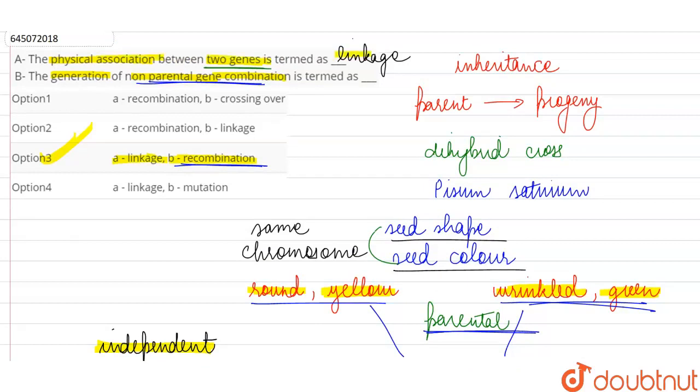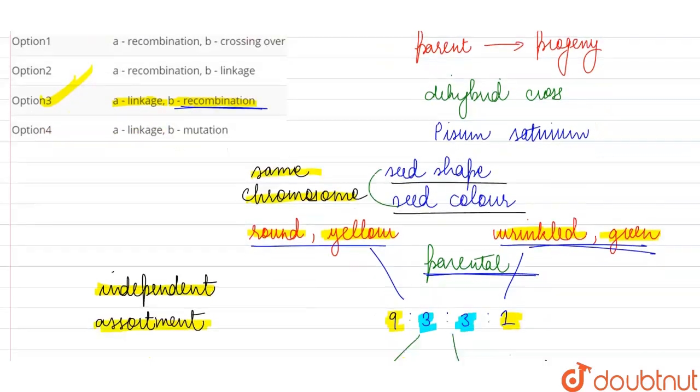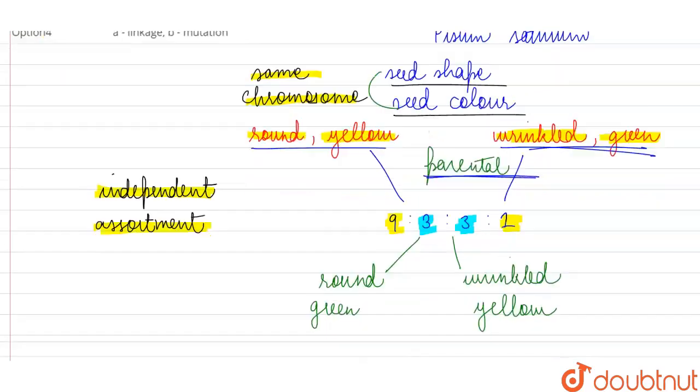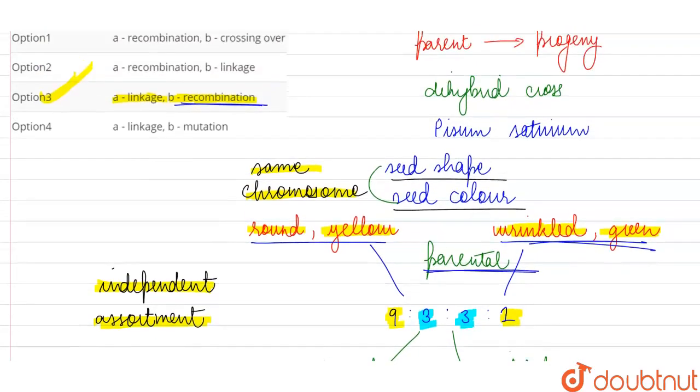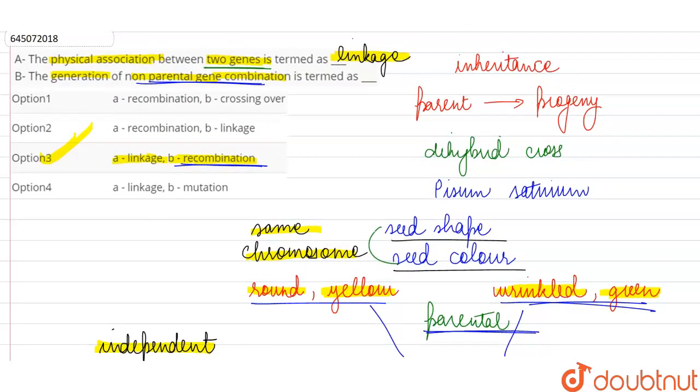So we are going to fill up these blanks by the term linkage and recombination respectively. Physical association of two genes is called linkage. It is seen when two genes are on the same chromosome. So independent assortment law does not hold good anymore and non-parental gene combinations are not generated in a good frequency. Or we can also say that frequency of recombination decreases because generation of such non-parental combinations is called recombination. So option C is our correct answer.